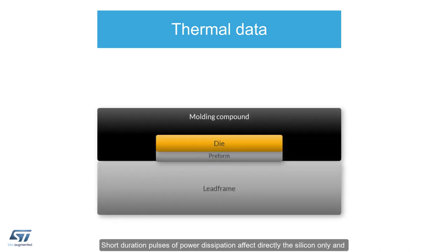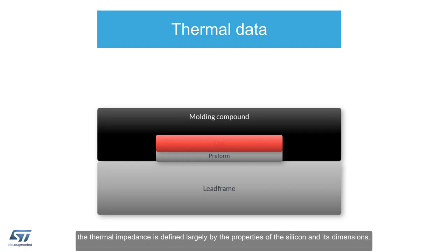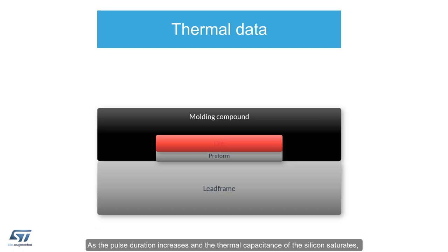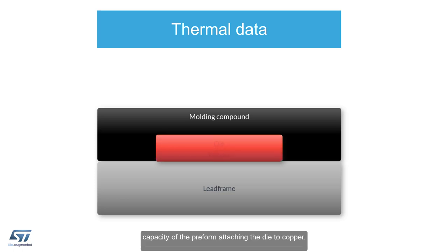Short duration pulses of power dissipation affect directly the silicon only, and the thermal impedance is defined largely by the properties of the silicon and its dimensions. As the pulse duration increases and the thermal capacitance of the silicon saturates, we now define the impedance based on silicon size and the thermal capacity of the preform attaching the die to copper.